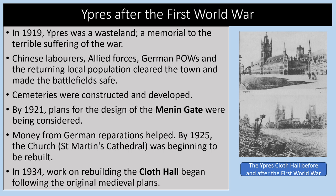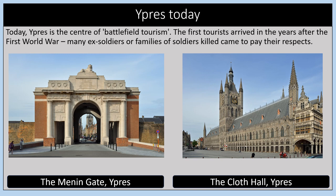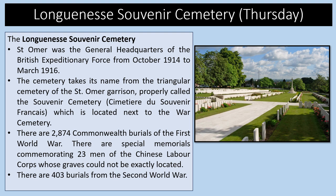After the First World War, in 1919, Ypres was a wasteland. Chinese labourers, Allied forces, German prisoners of war, and the returning local population cleared the town and made the battlefield safe. Cemeteries were constructed, and by 1921 plans for the design of the Menin Gate were being considered. Money from German reparations helped. By 1925 St Martin's Cathedral was beginning to be rebuilt, and in 1934 work on rebuilding the Cloth Hall began following the original medieval plans. Today Ypres is the centre of battlefield tourism, with the Menin Gate and the Cloth Hall both fully rebuilt.